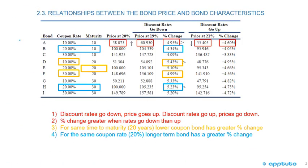We're going to look at this chart with some color coding to go through the four relationships about the change in bond price given the market discount rate. We have bonds A through I. Bonds A, B, C have coupon rates 10, 20, 30 percent with maturity 10 years. Bonds D, E, F have coupon rates 10, 20, 30 percent with maturity 20 years. Bonds G, H, I have coupon rates 10, 20, 30 percent with maturity 30 years.